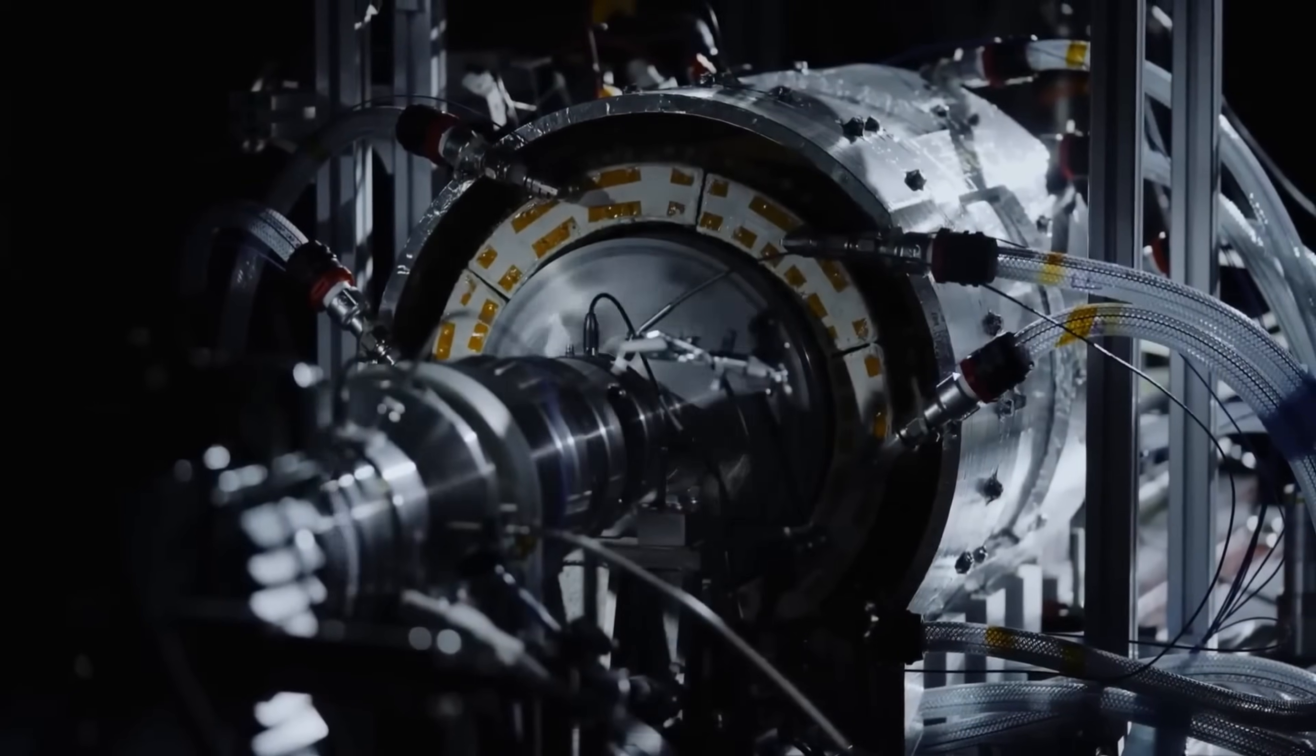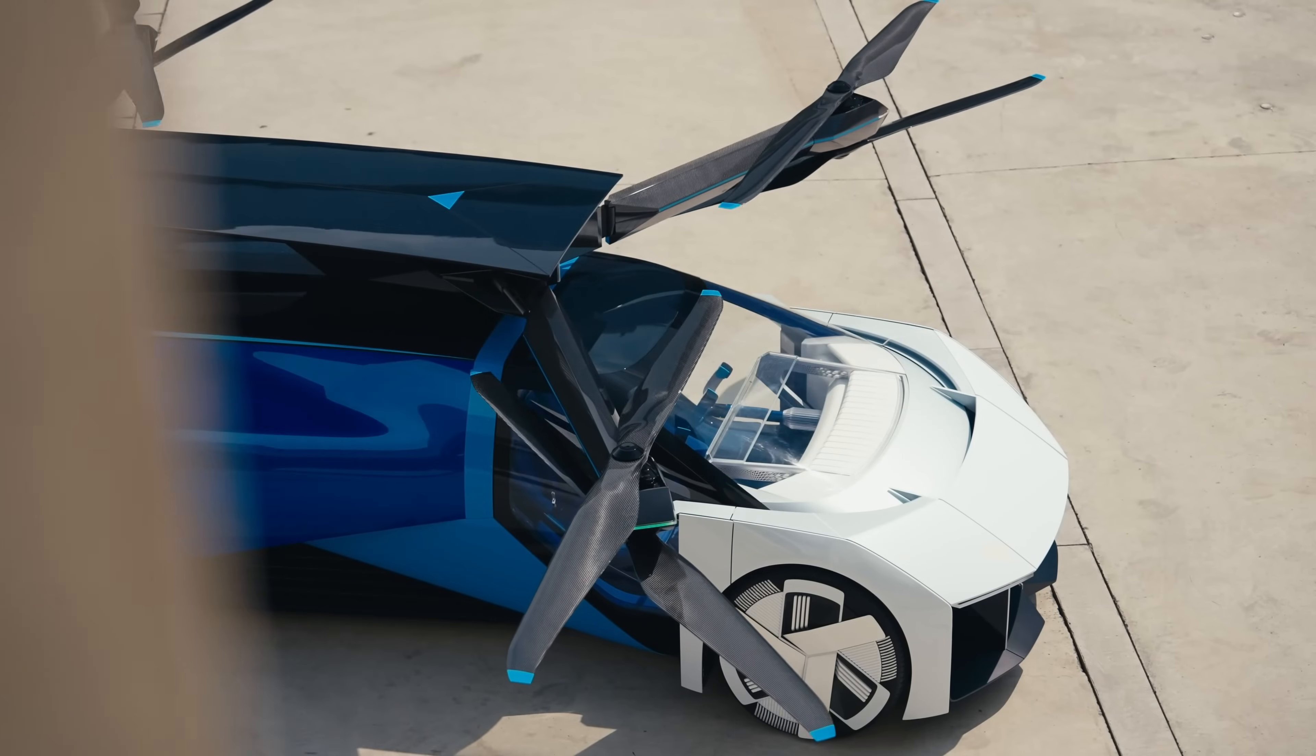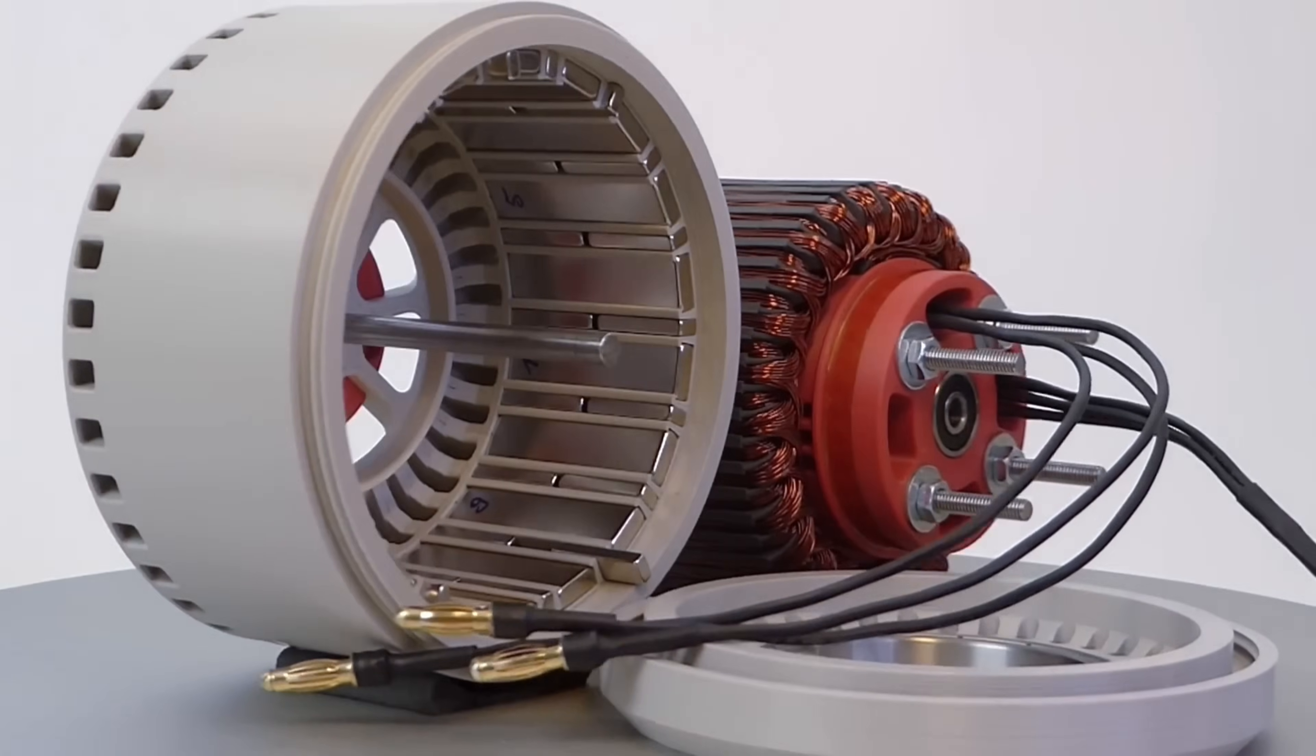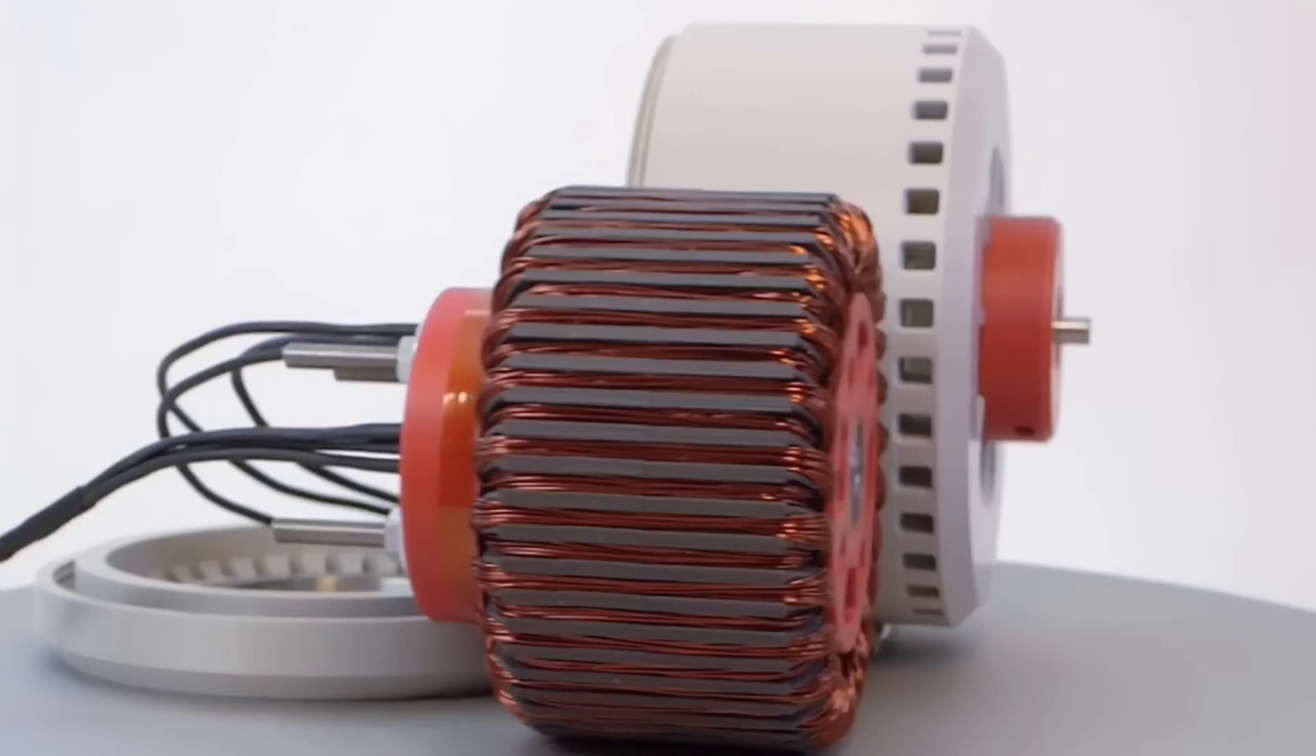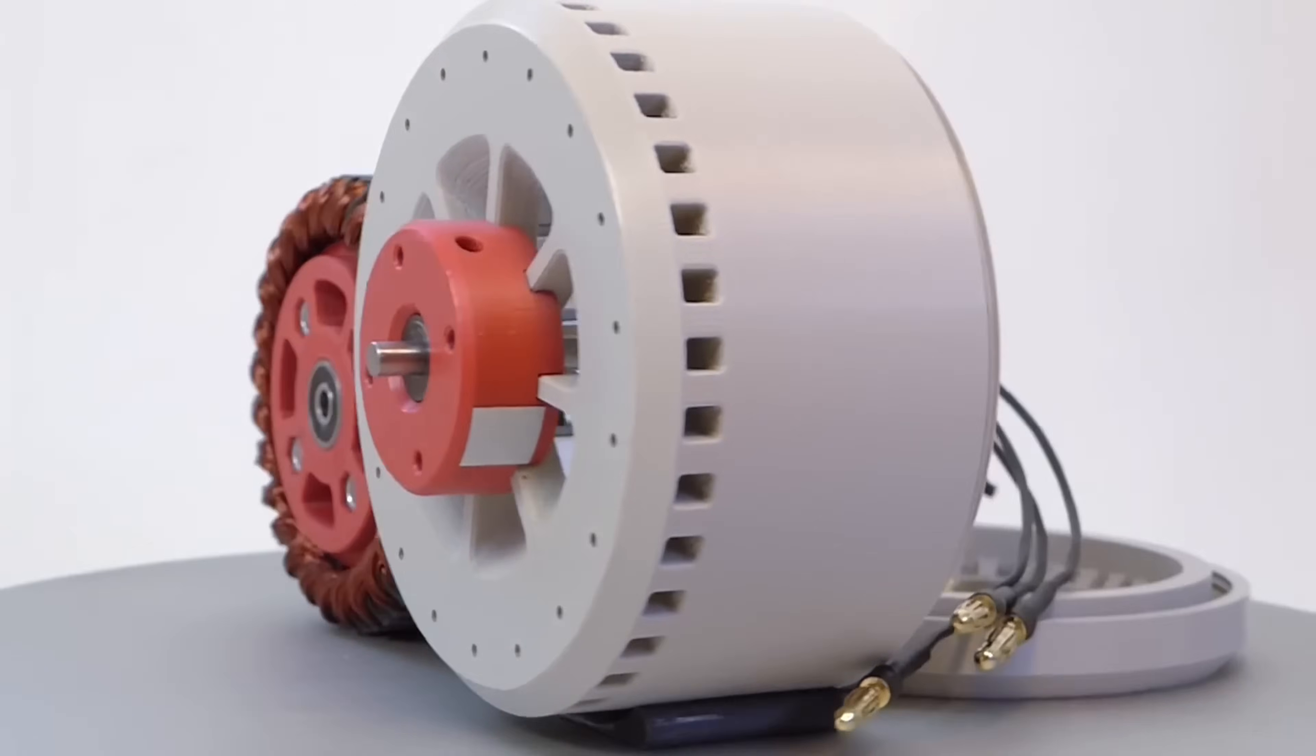These motors could also enable novel aviation concepts. With their high power density, imagine electric VTOL aircraft that can take off and land vertically like helicopters but fly horizontally much farther on fixed wings. Cargo drones capable of carrying heavy payloads over long distances could revolutionize shipping. And electric ultralight craft may become practical for personal transit and recreation. The aviation industry is primed for disruption, and this motor makes new categories of electric flight attainable.